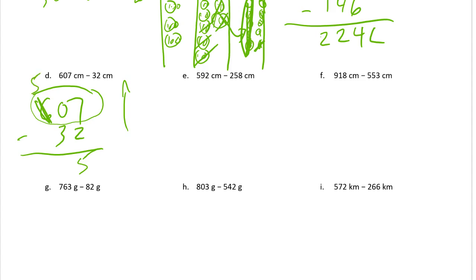So we're going to break up one of these hundreds and get ten tens for that. Ten minus three is seven, and we have five hundreds left. That gives us five hundred seventy-five. Make sure that seven looks like a seven.